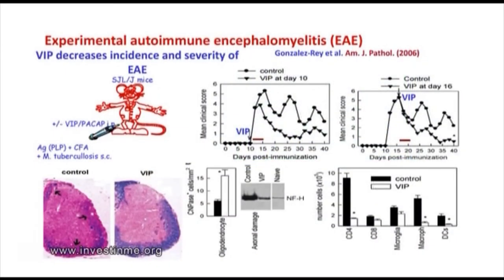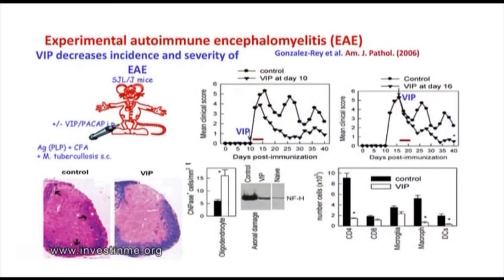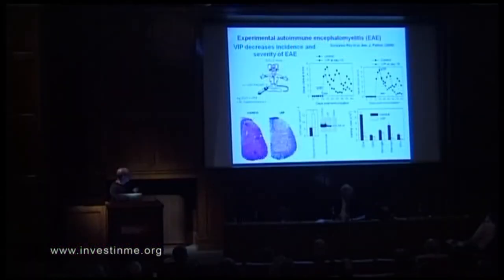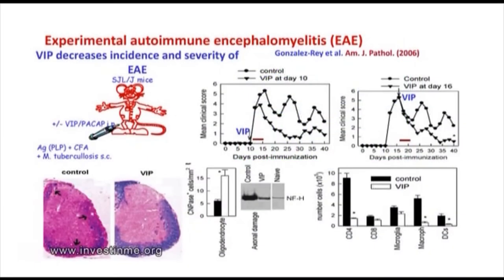Moving to a neurological disease with a potent immune component — multiple sclerosis — we use the experimental autoimmune encephalomyelitis model. In susceptible mice injected with an autoantigen, we generate different peaks of paralysis scored from 0 to 6, ranging to paraplegia and tetraplegia. This paralysis results from complete demyelination of the spinal cord, loss of oligodendrocytes, axonal damage, and massive infiltration of T-cells and macrophages.